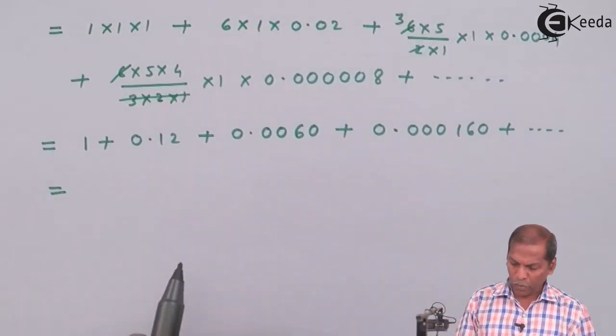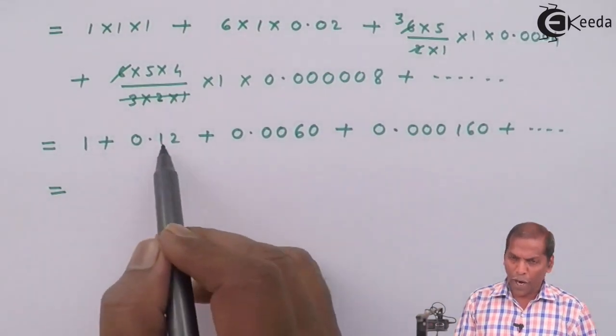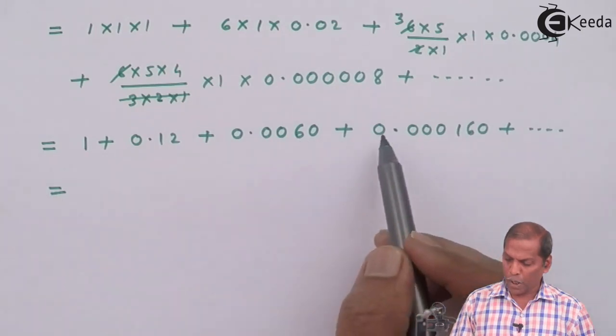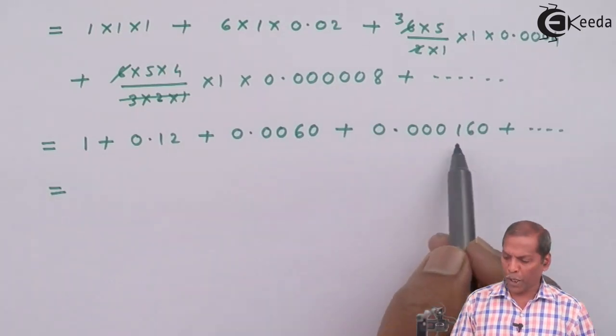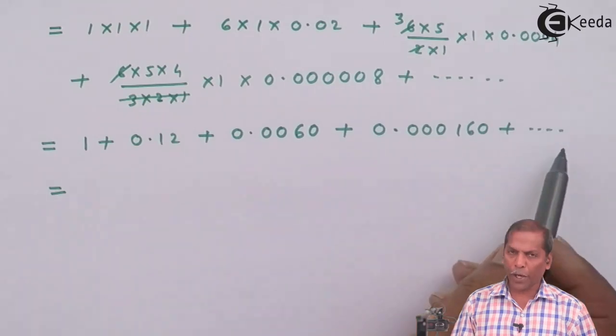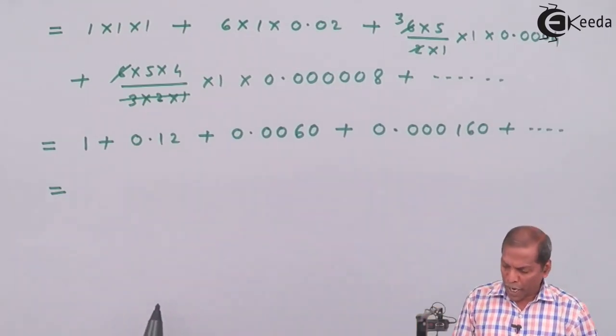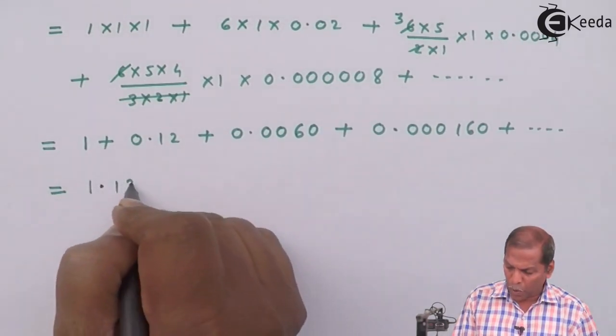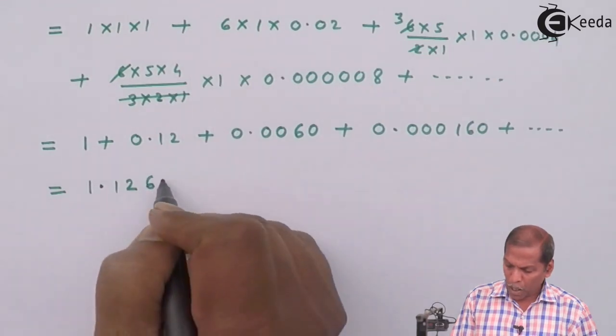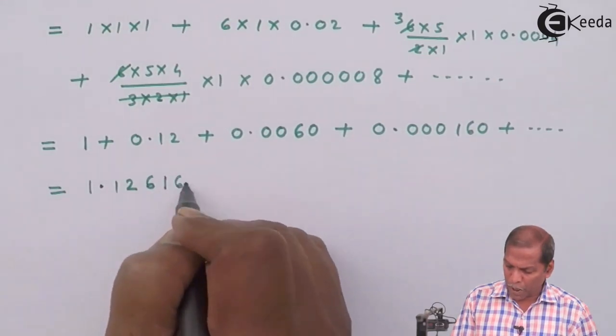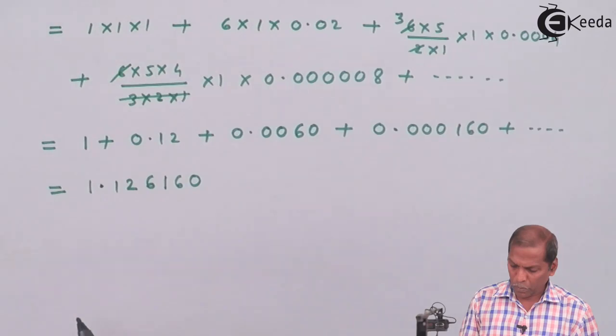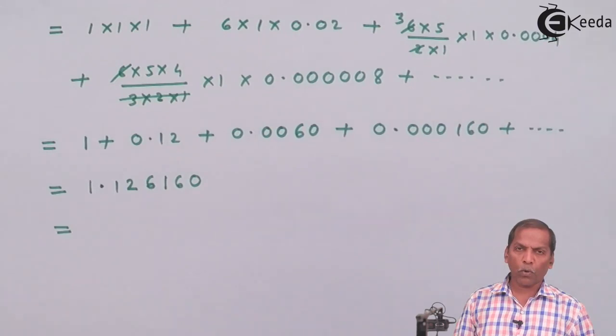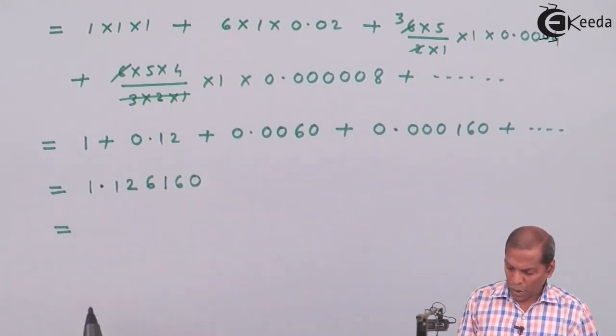So the next step will be 1 plus 0.12 plus 0.0060 plus 0.000160 plus going on. So on adding these terms we get 1.126160.